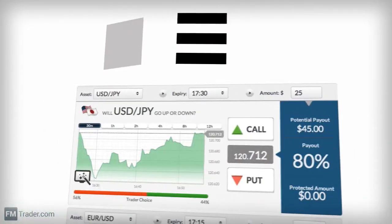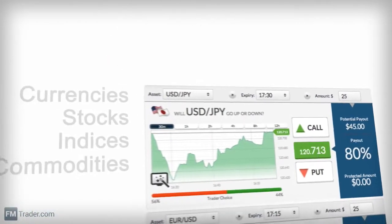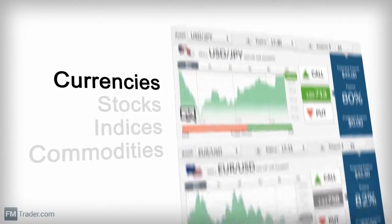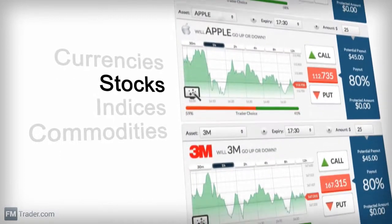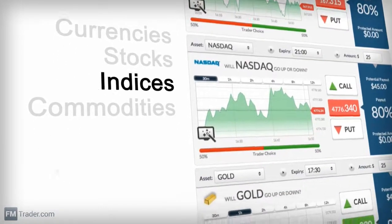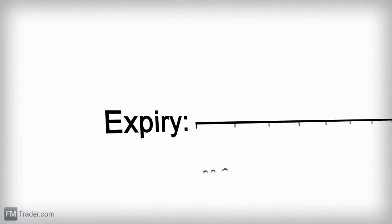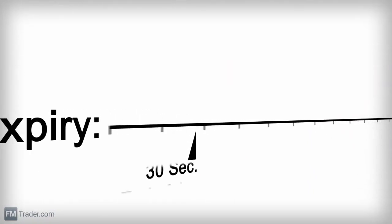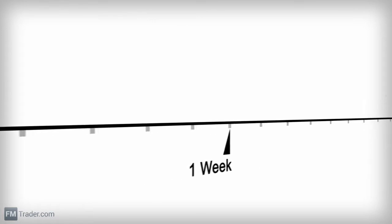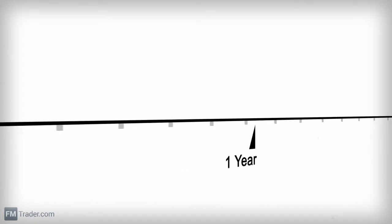We offer the largest range of assets for you to trade, including currencies, stocks, indices, and commodities, and expiries from 30 seconds to end of day, one week, or even a year.